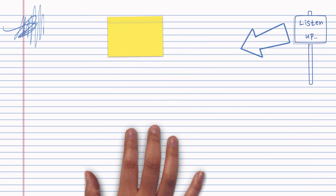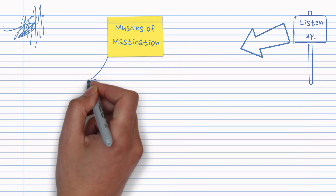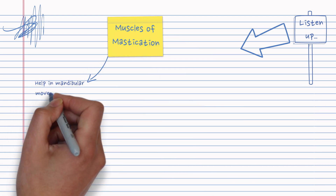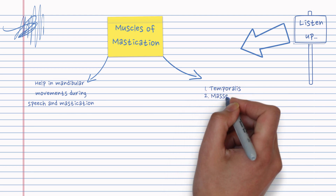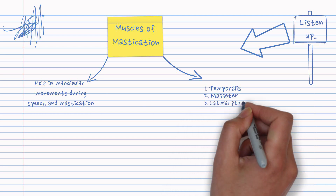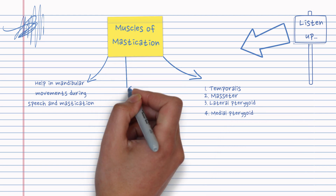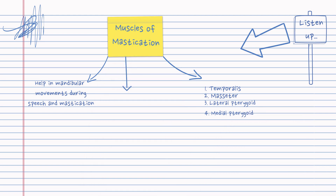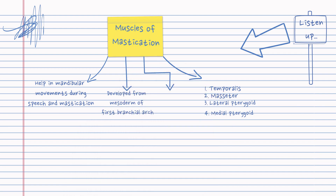Welcome to a new video on muscles of mastication. Mastication requires mandibular movements, and the muscles that help in mandibular movements during speech and mastication include four muscles: temporalis, masseter, lateral pterygoid, and medial pterygoid. They developed from the mesodermal first branchial arch.